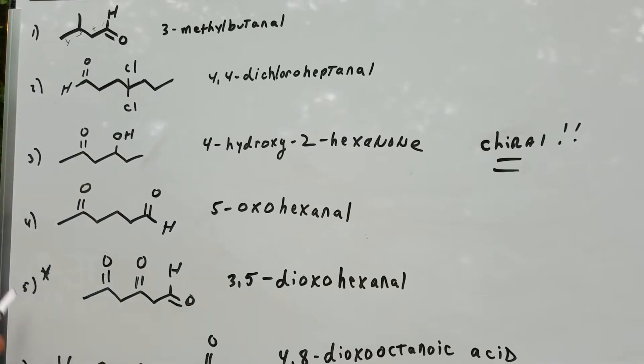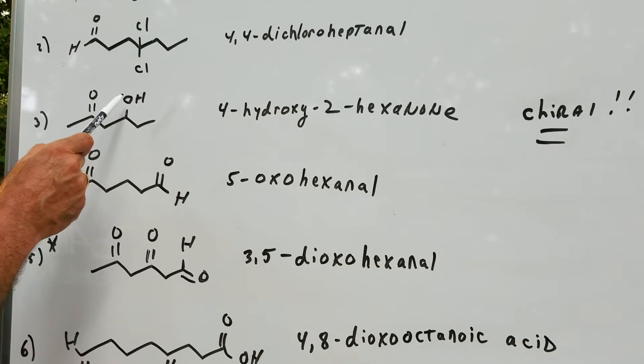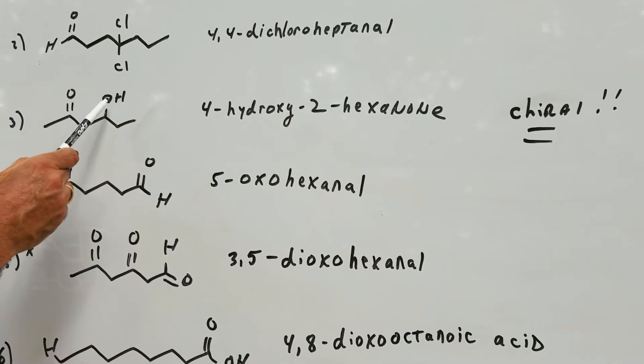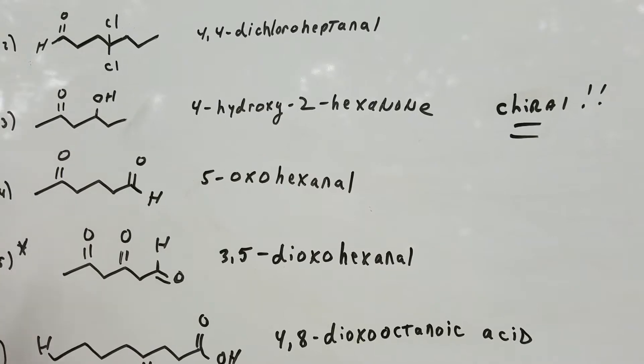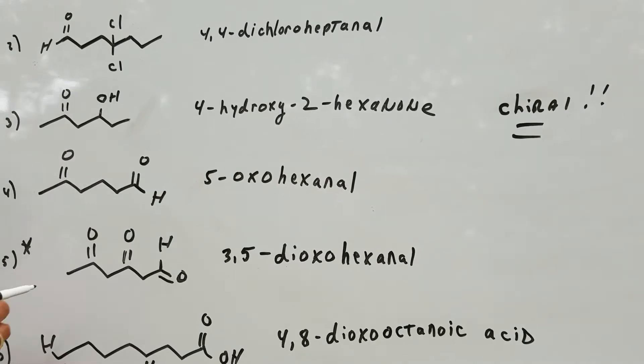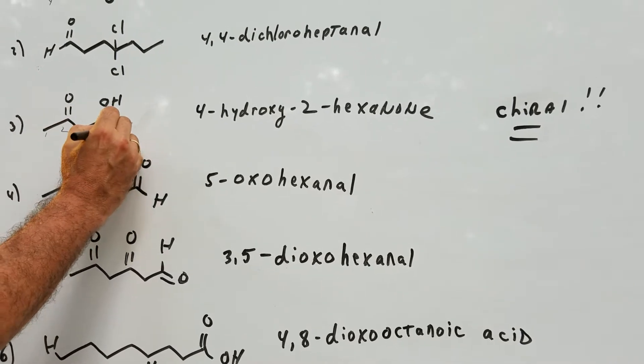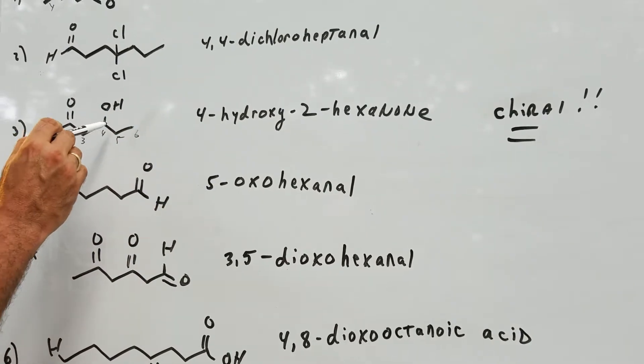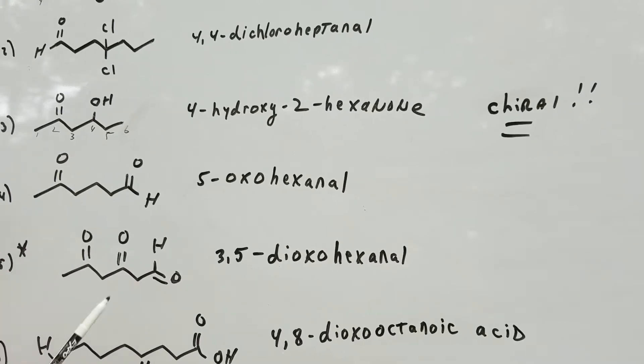So if this is position one, that means that these chlorines would be at position four. That would give me 4,4-dichloroheptanal, and that's all there is to it. Now the naming of ketones: notice there's two functional groups here, but the aldehyde as well as the ketone group has priority over an alcohol group.